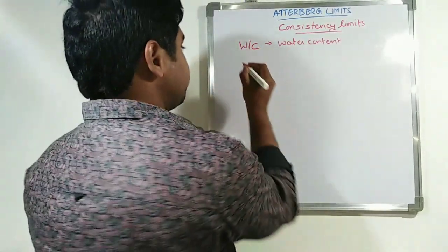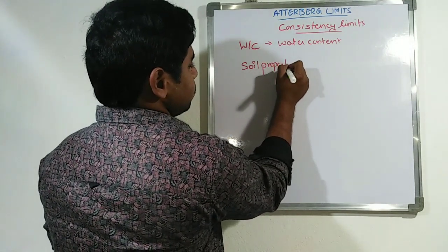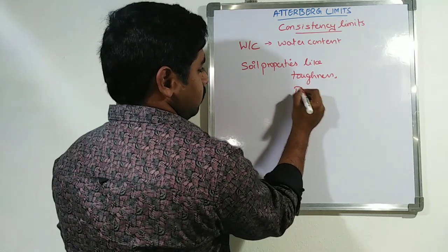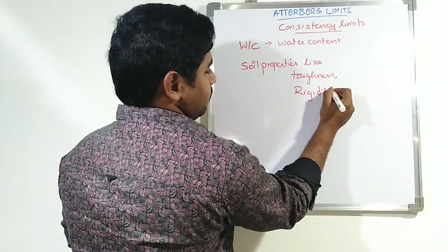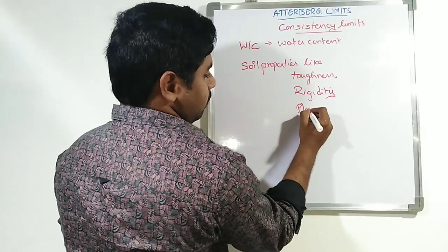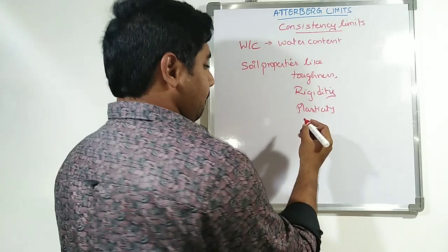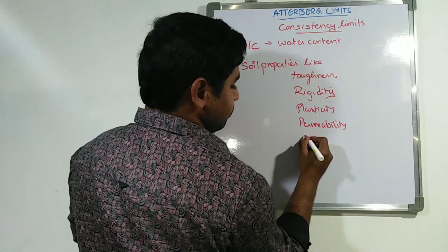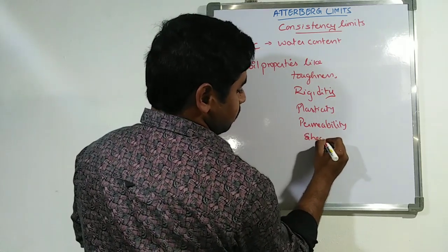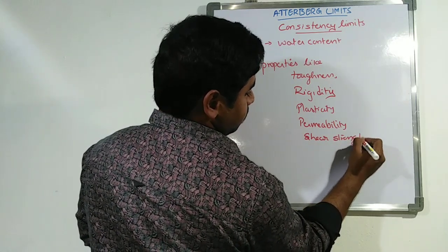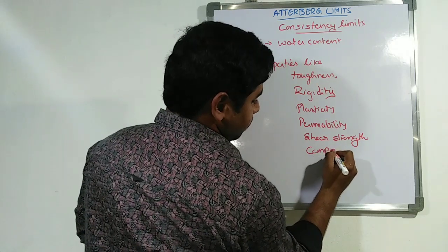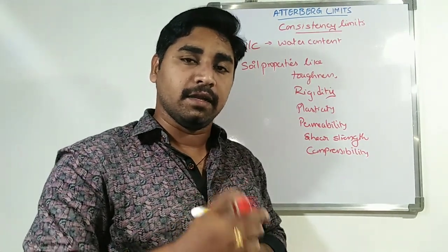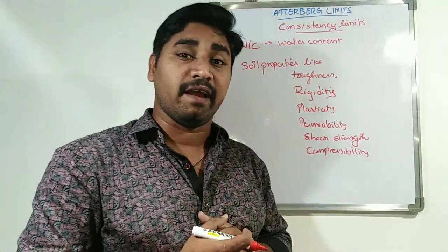If you take soil properties like toughness, rigidity, plasticity, permeability, shear strength, and compressibility — all these physical properties are dependent on the amount of water available in that soil.